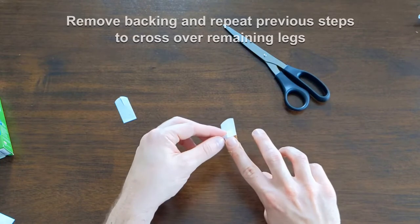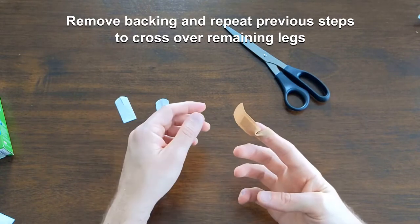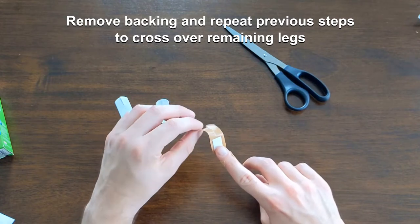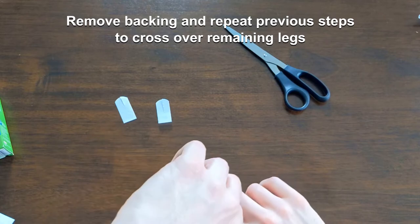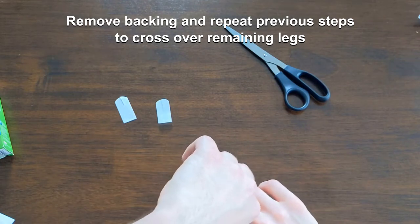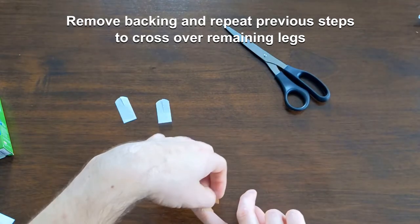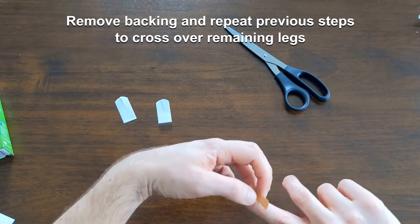But now you can take the backing off the other side and do the same thing. Take one leg, bring it across at like a 45 degree angle, probably hard for you to see right now, bringing it across that way. I want to do the same thing with this other side.